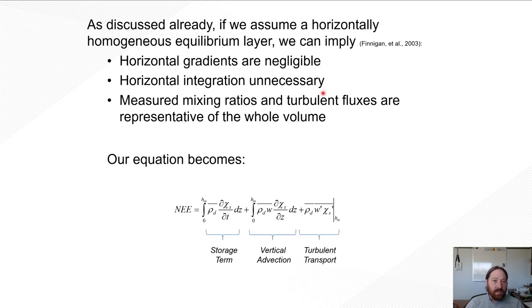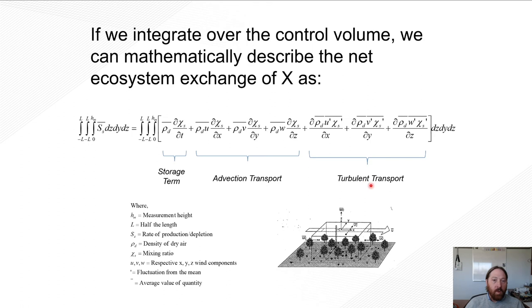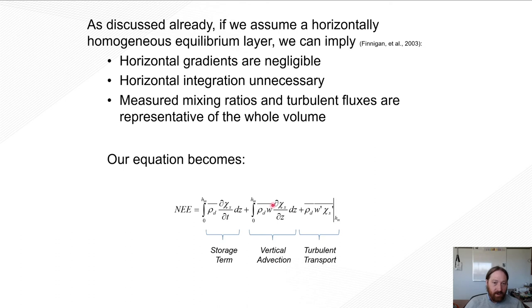So again, if we assume things like horizontal gradients are negligible, horizontal integration is unnecessary, and that mixing ratios and turbulent fluxes are representative of the whole volume, we can essentially take this equation here, get rid of the horizontal advection term and end up with a storage term, a turbulent term, and a vertical advection term. Well, we can actually get rid of that vertical advection term as well because we assume that the average vertical wind speed is zero, so that gets rid of that term, so we get a term measured by the eddy covariance system, the turbulent vertical transport, and we get a term measured by something like a profile system, our storage term.